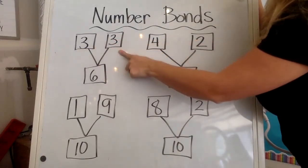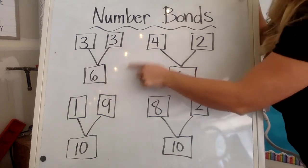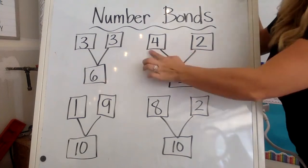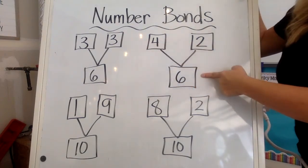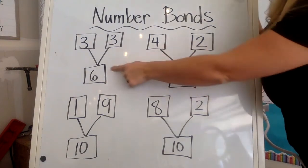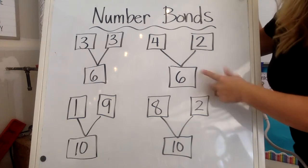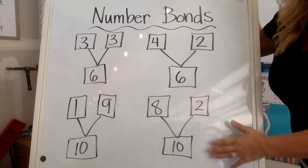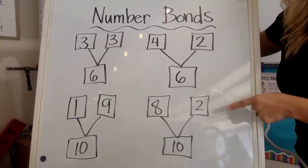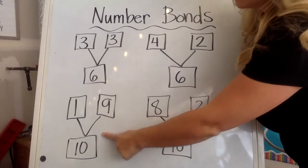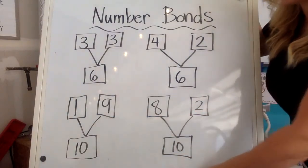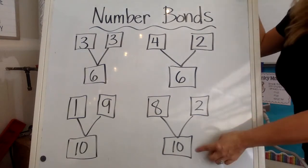Three and three is a number bond to equal six, but you can also use a different bond to get to six. You could also do four and two equals six — there are a few more ways to get to six. Same thing for ten: one and nine is a number bond for ten, and eight and two also makes ten, but just in a different way.